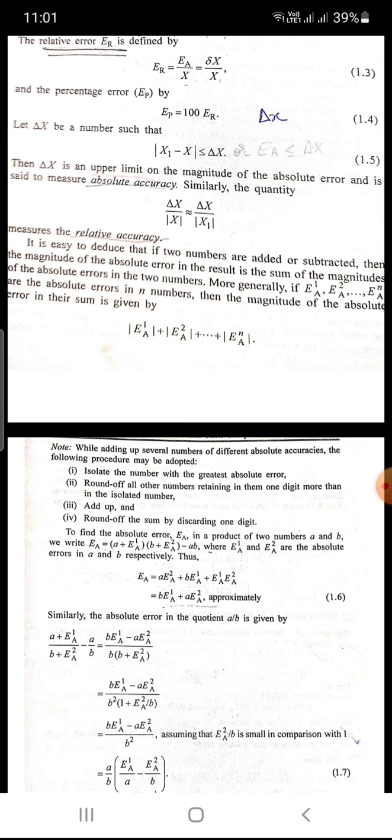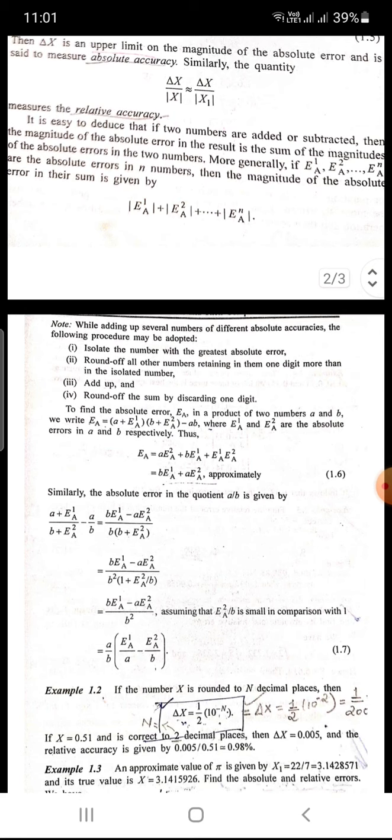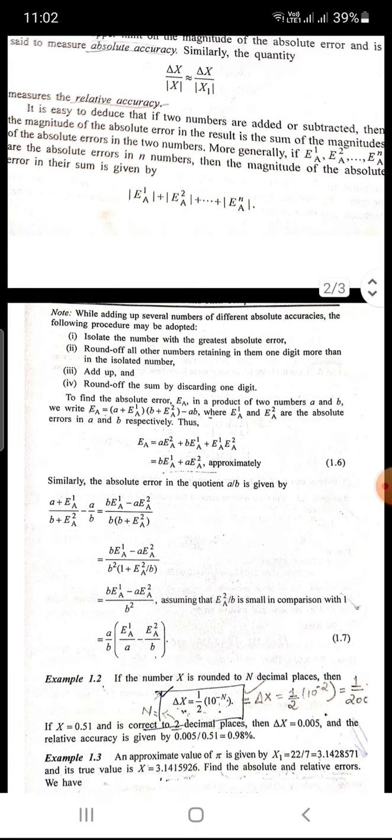Now while adding up several numbers of different absolute accuracy, the following procedure may be adopted: First, isolate the number with the greatest absolute error.